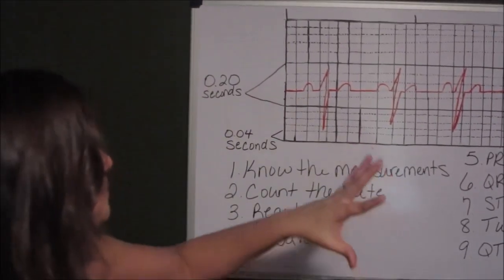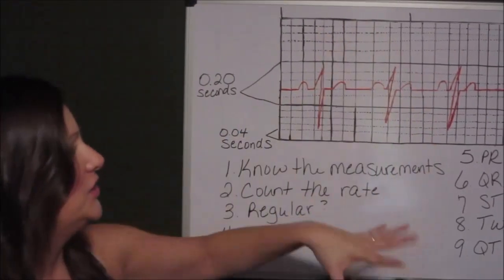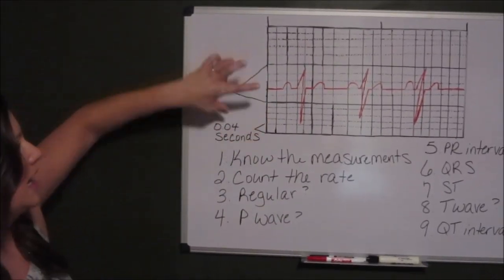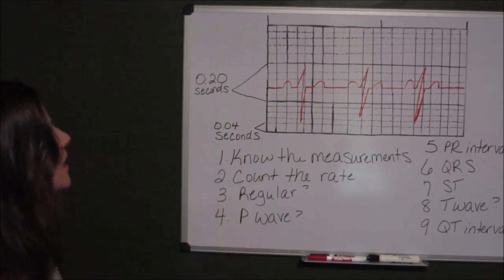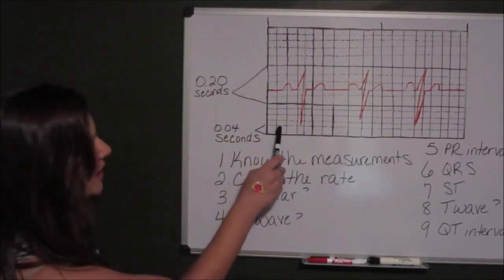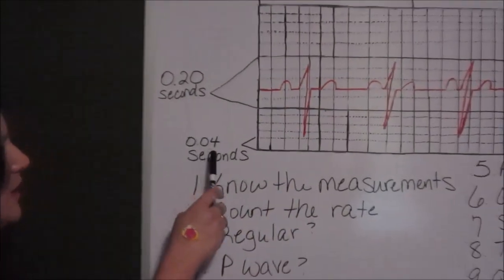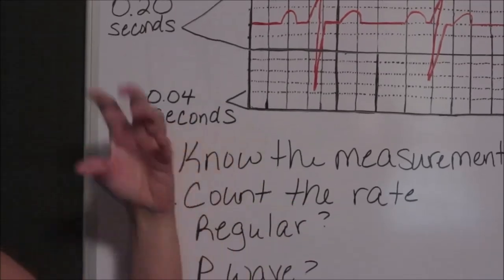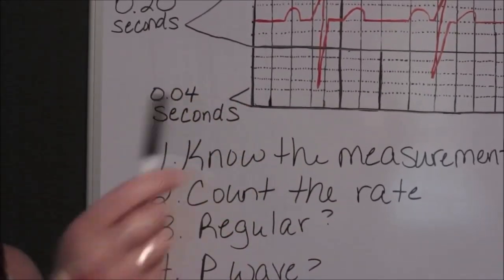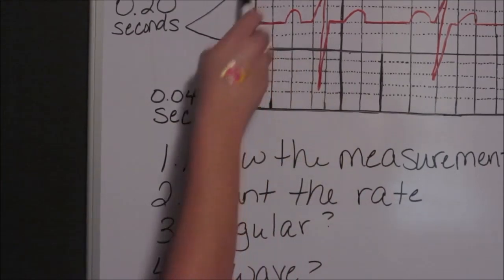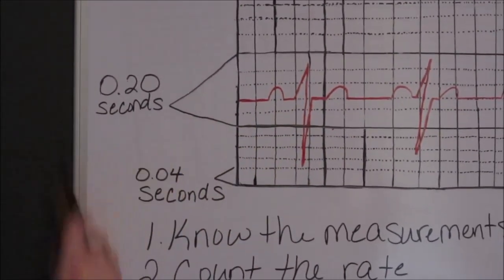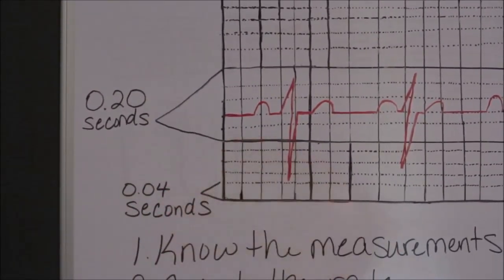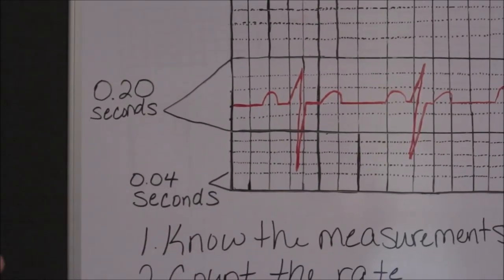With your 6 second strip, you will have an EKG grid. The grid will be broken up into the big boxes and the smaller boxes. Every small box like this is going to be a measurement of 0.04 seconds. The big box is going to be 0.20 seconds.